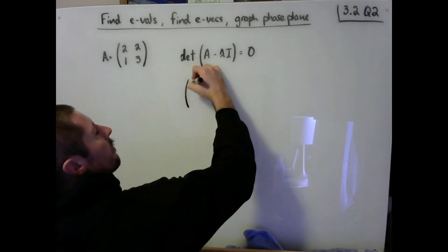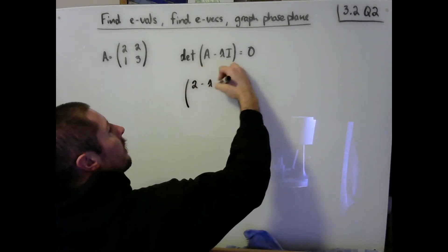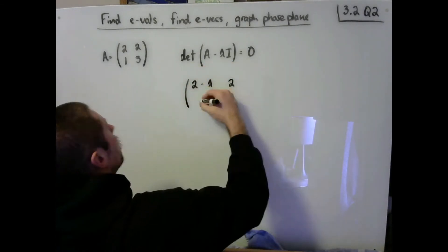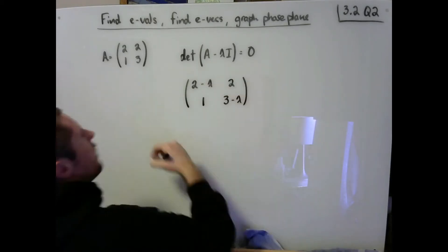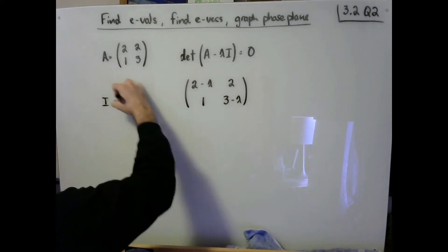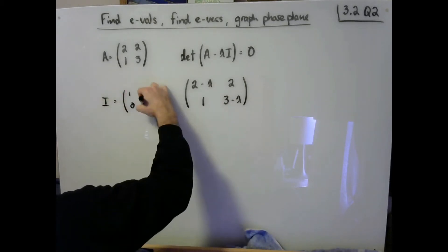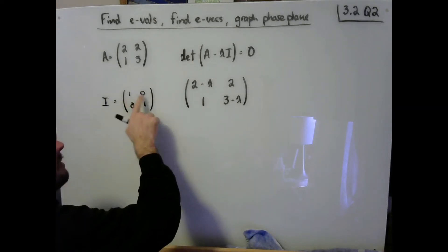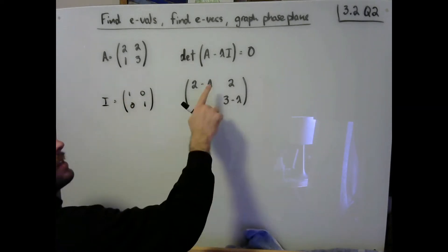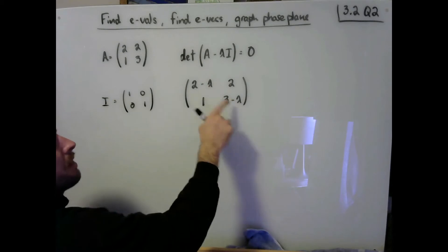Here, we've got 2 minus lambda, 2, 1, 3 minus lambda. Remember that I is the identity matrix. When we multiply I by a constant of lambda, it just becomes lambda, 0, 0, lambda. We can see that we have subtracted off the lambdas on the main diagonal here.